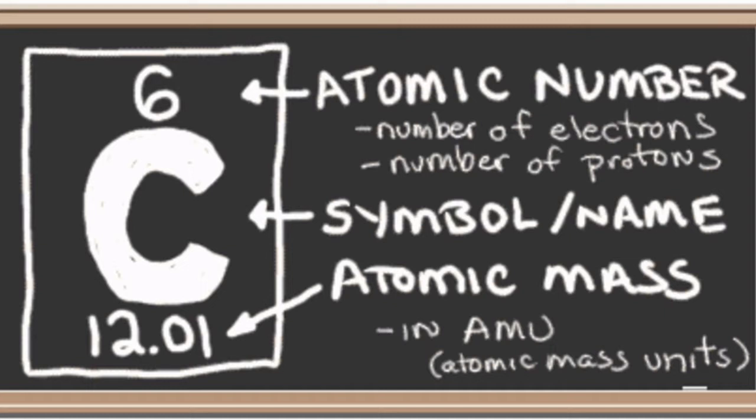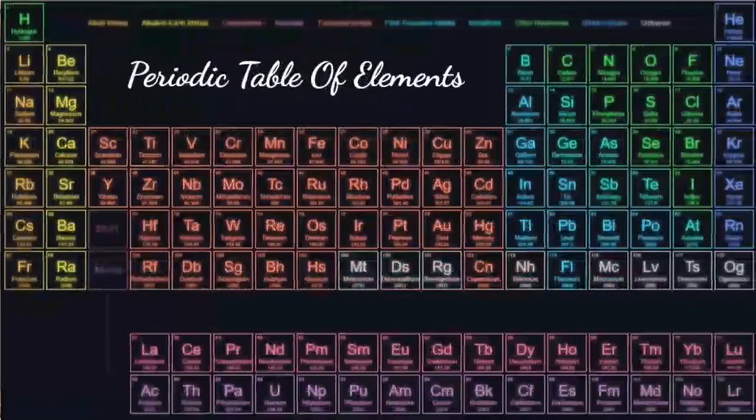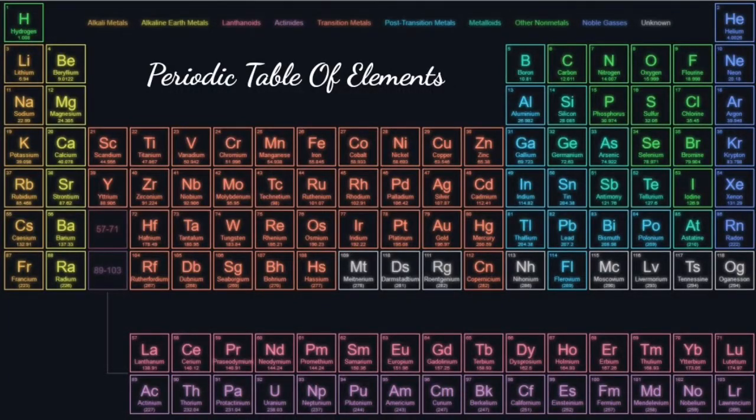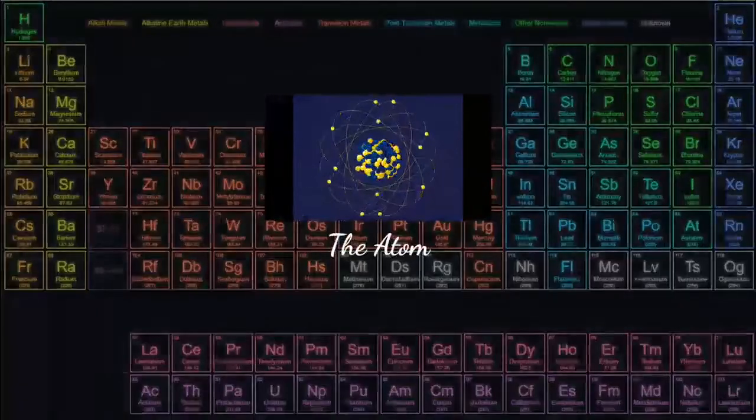Eventually, you will all familiarize yourselves with all 118 elements and their descriptions. For every single one of the elements you see here, their most basic unit, and the answer to the aforementioned question, is the atom.